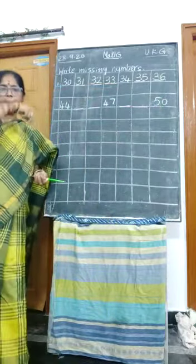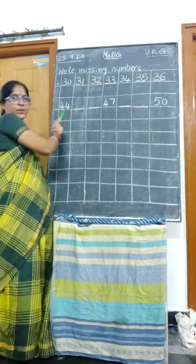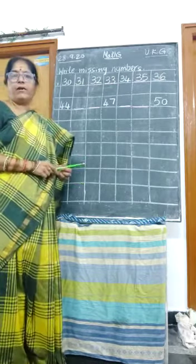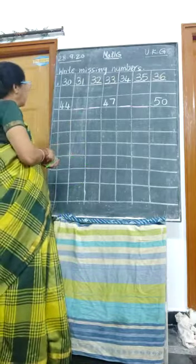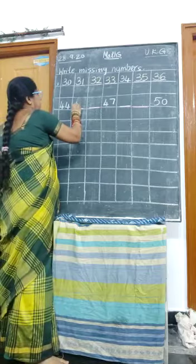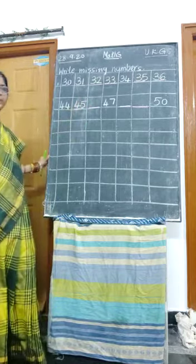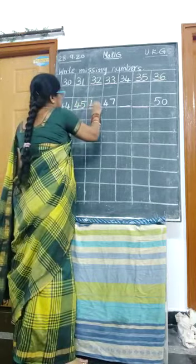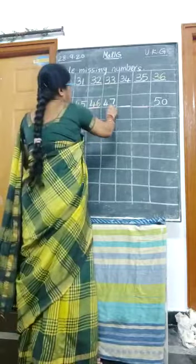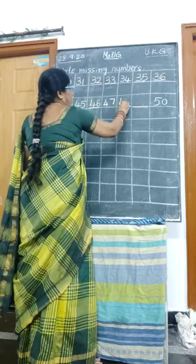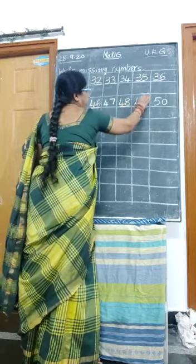Okay children, note all this. What number? 44. 44 after? After number, what comes? 44 after — 45. Okay children, 45 after — 46. Next is 47. 47 after — 48. 48 after — 49.